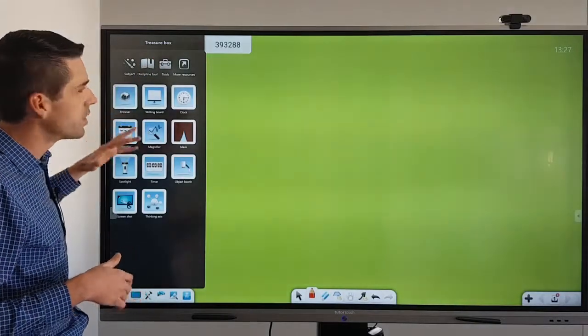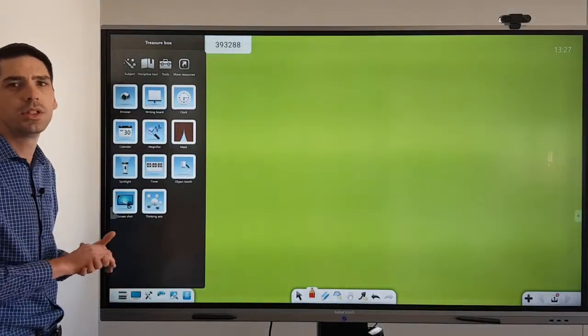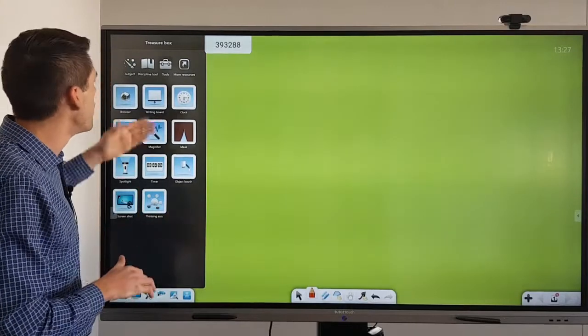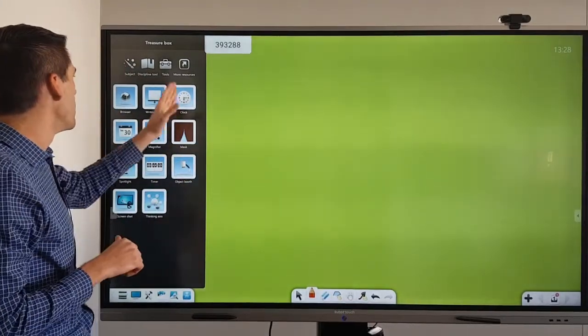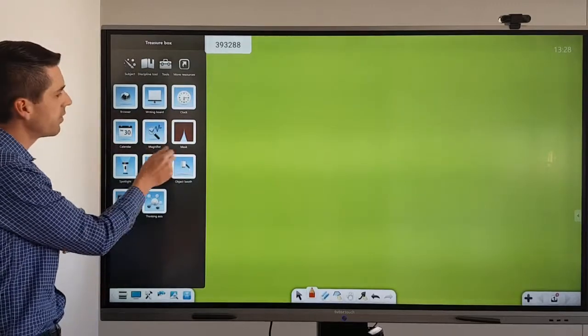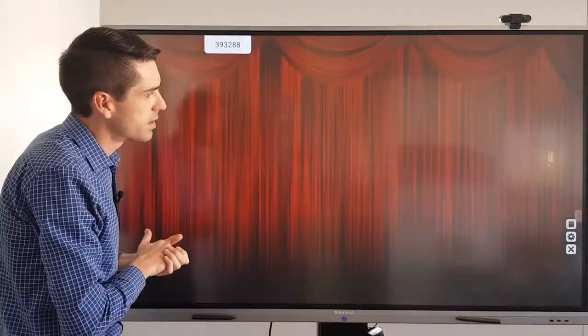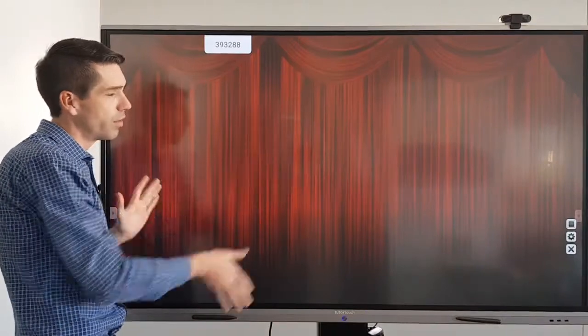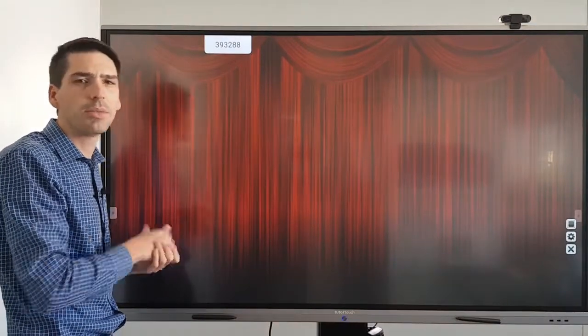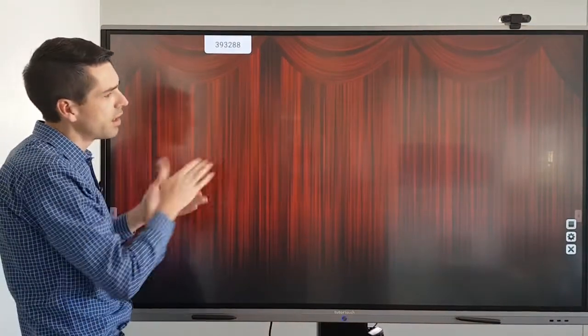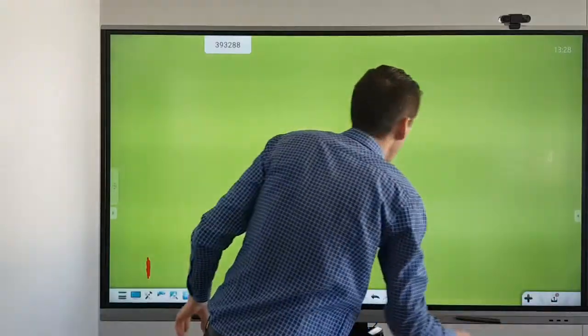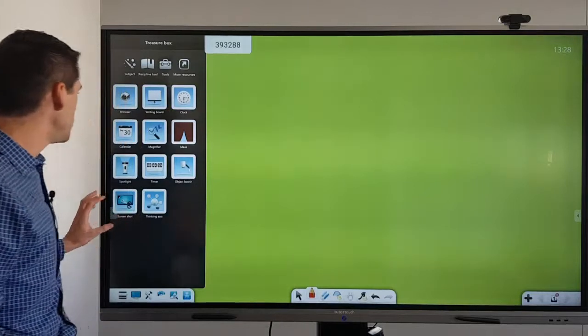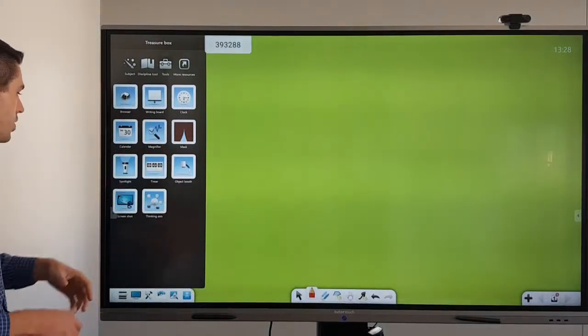Then next in line would be your tools, so these are essentially extra things you can do over and atop the note program, for instance the whiteboard to give you some extra writing area and your clocks, your calendars, your magnifying glasses, your masking feature. So for instance if you have question and answer time you can write the answers on the board, close off the panel and then they have to recall from memory and then you do have a couple of additional features like your spotlight, your timer and your object booth.